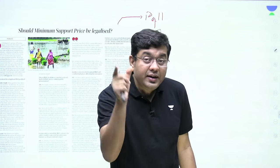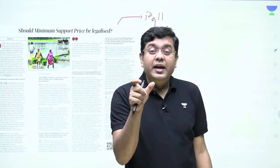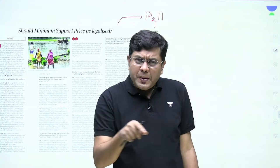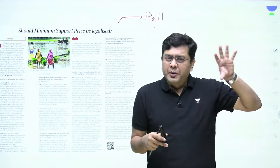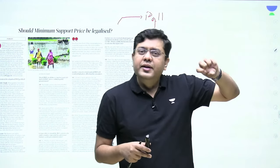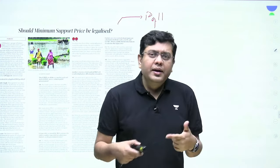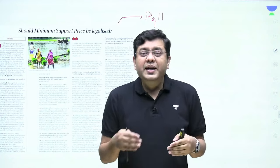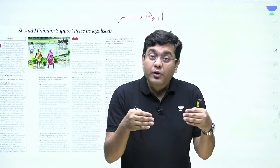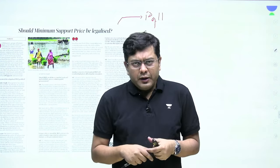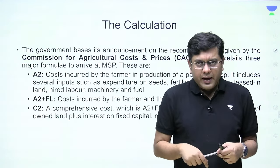Currently, farmers benefiting from MSP are largely from the north-western Green Revolution states — Punjab, Haryana, and western Uttar Pradesh. In the remaining parts of the country, mandi systems are not well developed, so farmers get lower prices. On what basis is MSP calculated and who calculates it? MSP is finalized by the cabinet after looking at recommendations from the CACP.